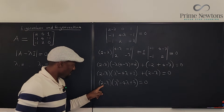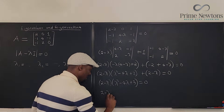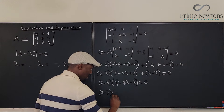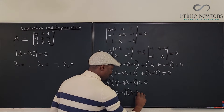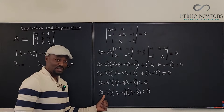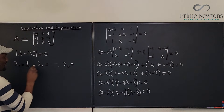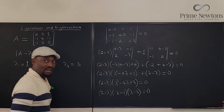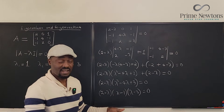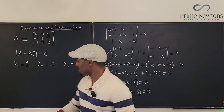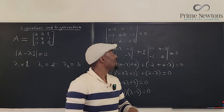Now this is a cubic equation in factored form. Factoring lambda squared minus 4 lambda plus 3 gives (lambda minus 1)(lambda minus 3). So the full factored form is (2 minus lambda)(lambda minus 1)(lambda minus 3) equals 0. That tells us lambda 1 equals 1, lambda 2 equals 2, and lambda 3 equals 3. Taking the determinant is the hardest part; once you do that, you solve the resulting equation to get your eigenvalues.